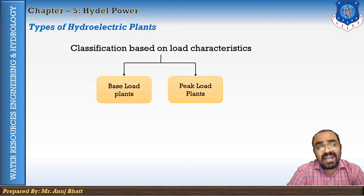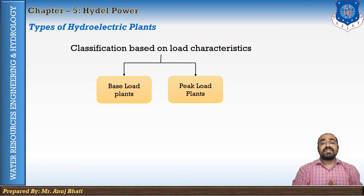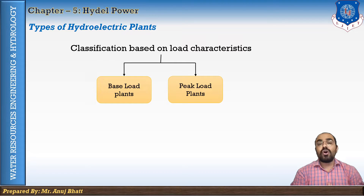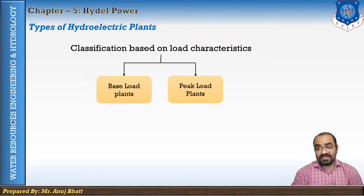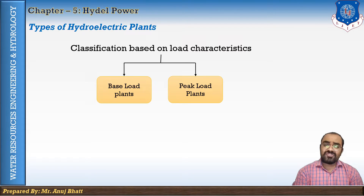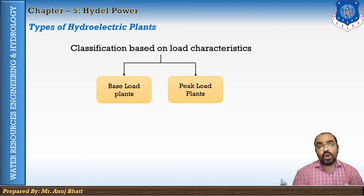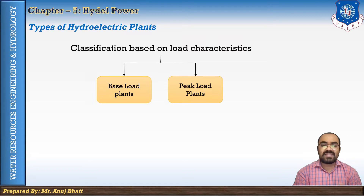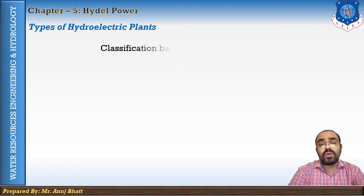A peak load plant is designed to take care of the peak load of the power system. It operates only during the period of peak load. Pumped storage plants are usually designed as peak load plants. A runoff river plant with pondage can operate either as a peak load plant or as a base load plant, depending upon the size of pondage.